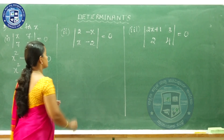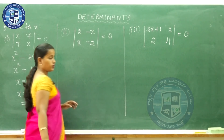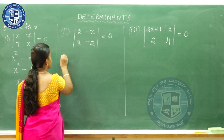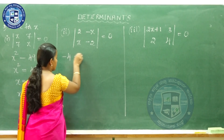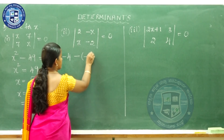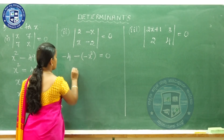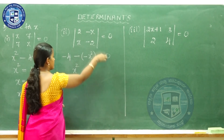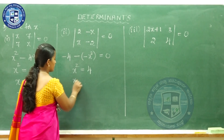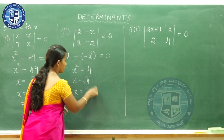Coming to the second question: determinant of [2, -x; x, -2] equals 0. So 2 into minus 2 is minus 4, minus x into minus x is minus x², equal to 0. This becomes x² equals 4, so x equals root 4, that is plus or minus 2.